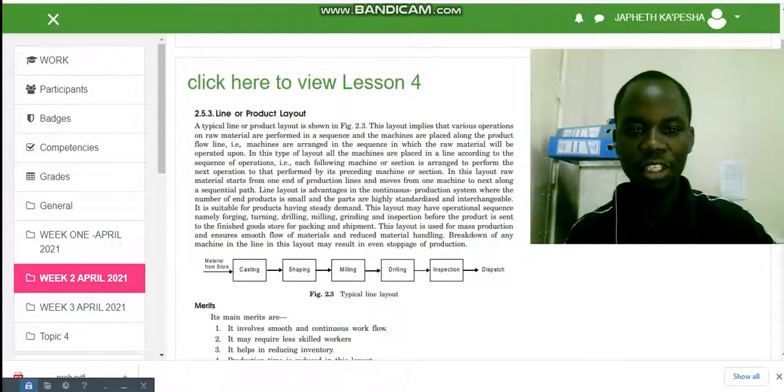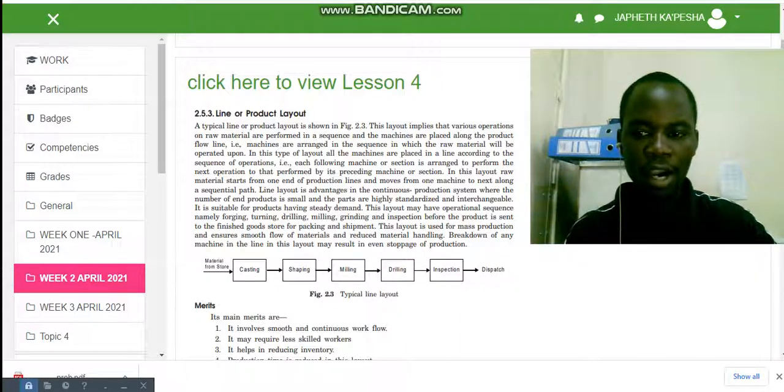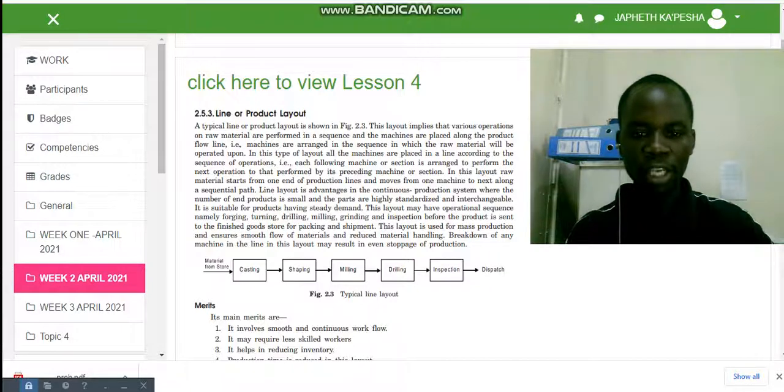It is suitable for products having steady demand. As you can see in Figure 2.3, we have raw material which comes at the left-hand end, and the first operation to be performed is casting, followed by shaping, then milling, then drilling, and lastly we have inspection. After inspection, it is then dispatched to the market.